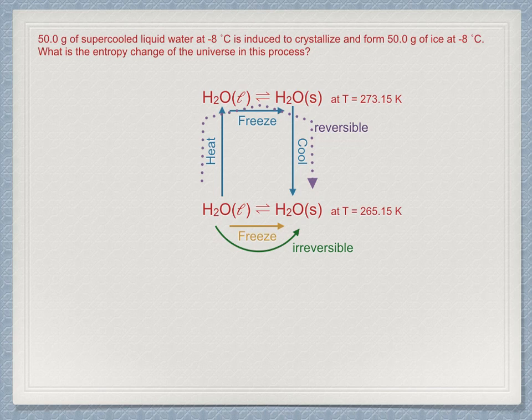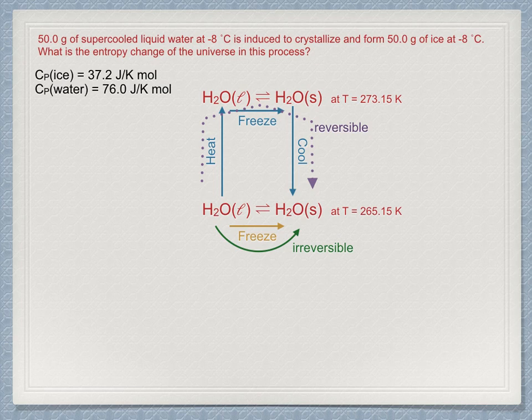In addition to the entropy of fusion, we need the heat capacity of liquid and solid water. Then we can use the equations found earlier to determine ΔS and ΔH for the process. We need the ΔH because that will be the heat that is transferred to or from the surroundings to determine the surrounding's entropy change.